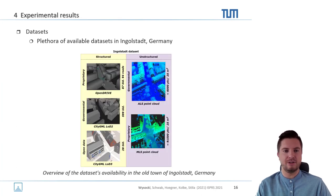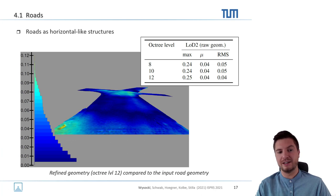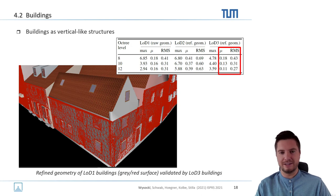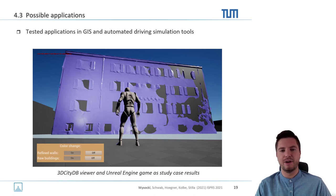We tested all results in Ingolstadt, Germany, because of the plethora of available structured and unstructured datasets. We tested horizontal-like structures on roads. As shown in the table, qualitative results yield quite interesting insights while quantitative results are less revealing — for example, cobblestone is visible in the picture but hard to perceive from the table. Our method works well for buildings: the RMS error in the table decreases compared to LOD-free models as the octree level — i.e., geometric resolution — increases. This was also tested on GIS tools and automated driving simulation tools like 3D CityDB and Unreal Engine, where we created an interactive game to explore the created models.